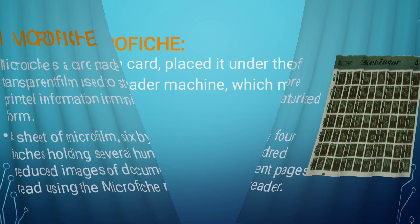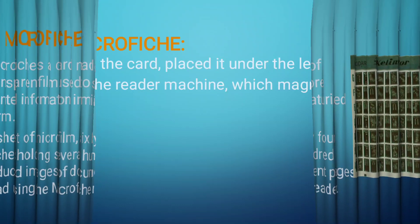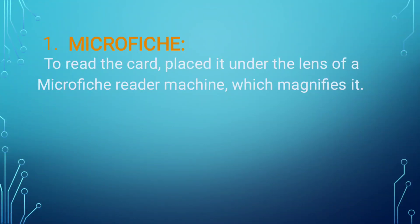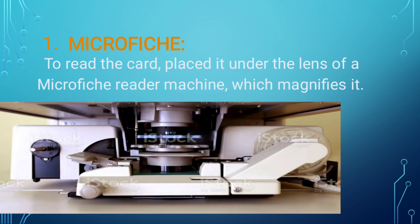To see the images and documents on microfiche, we use the microfiche reader. To read the card, place it under the lens of the microfiche reader machine, which magnifies it so we can view the images on the document. This is the microfiche reader machine used to magnify the images.